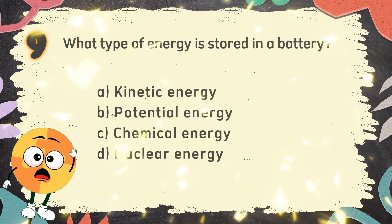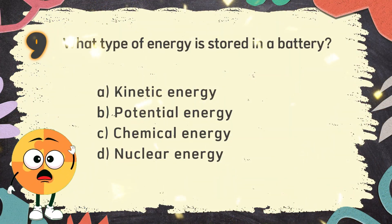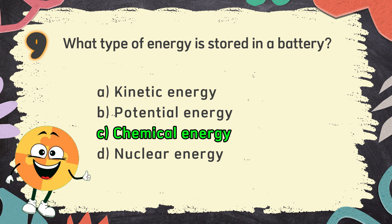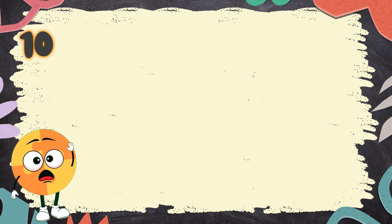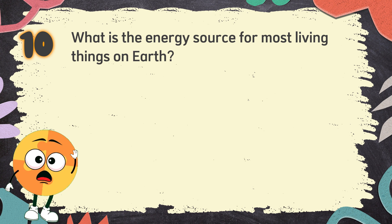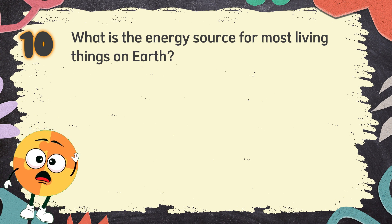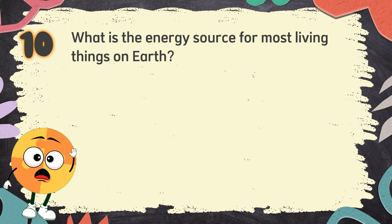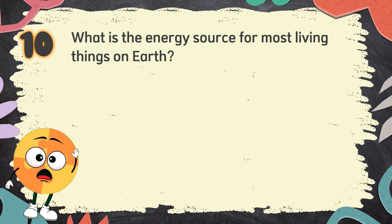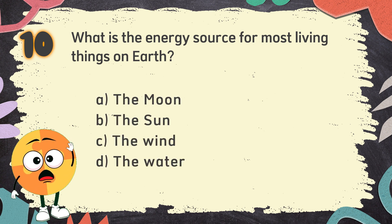The correct answer is C. Chemical energy. Number 10. What is the energy source for most living things on Earth? The choices are: A. The moon, B. The Sun, C. The wind, D. The water.